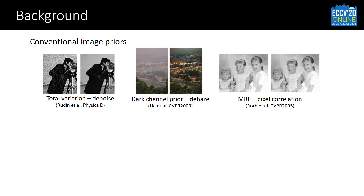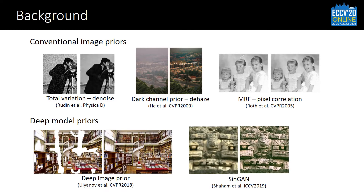Recently, deep learning models are used as stronger image priors, like deep image prior and thin GAN. These deep models allow more restoration tasks like inpainting and super resolution, but still have a gap towards a more general image prior.